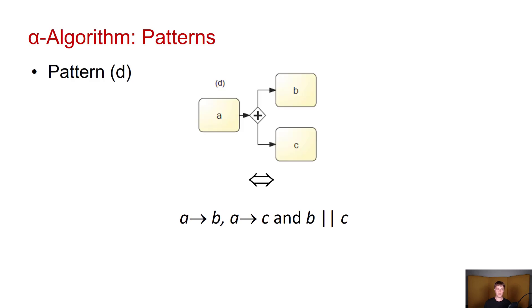For parallelism we again look at the directly follows relations. So A directly followed by B, A directly followed by C, and B and C occur in parallel, then we use a parallel split gateway. And for a join we see that B is succeeded by D, C is also succeeded by D, and B and C occur in parallel. And this is going to give us the parallel join gateway.